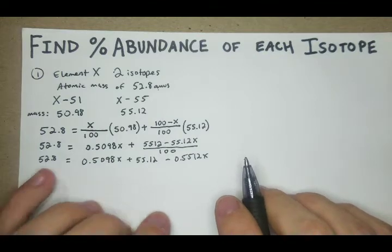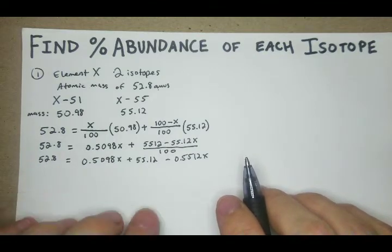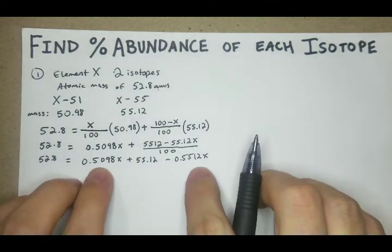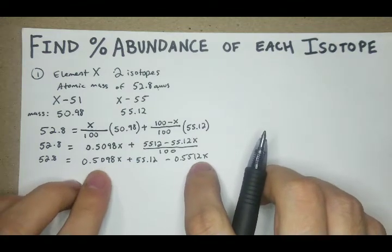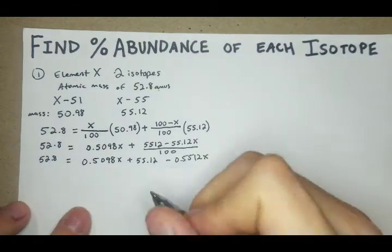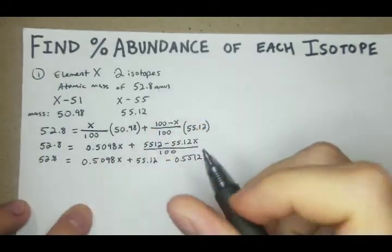Now look at what we got here. We got a number here, we got a number here, and then we got two multiples of X. So best thing to do here is just get rid of the numbers, get them all on one side, and then get all the X's onto one side.